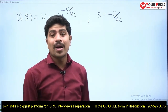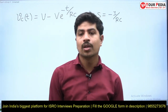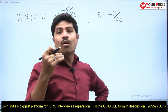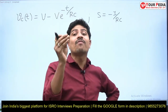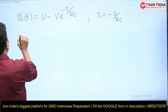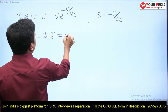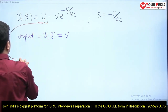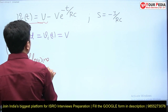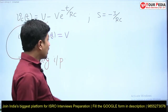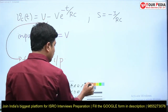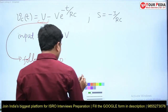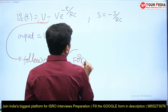The natural response is the part of the response which does not follow the input. 'Following input' means it is not having the same format as the input. The input is V — a DC input. If you observe this part of the response: the term V in VC(t) = V - V·e^(-t/RC) is also DC, so it follows the input. The part of the response that follows the input is called the forced response.